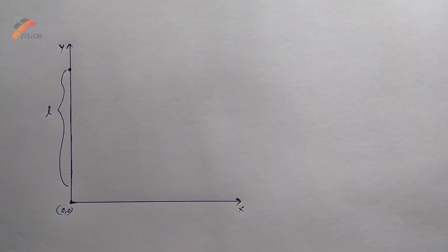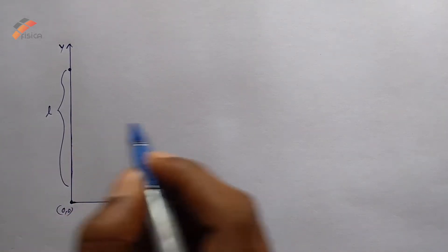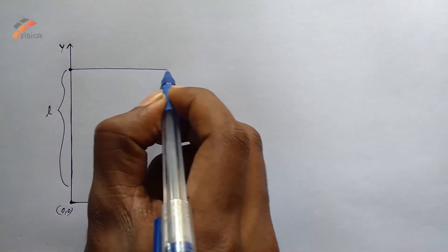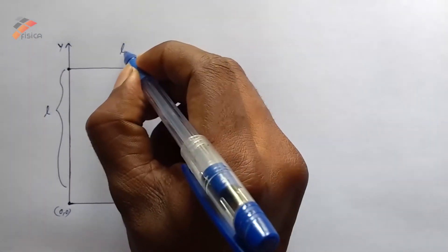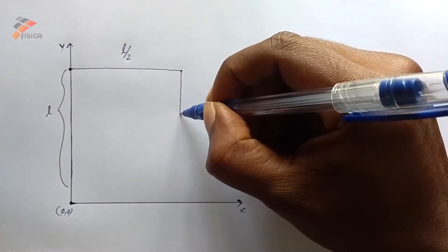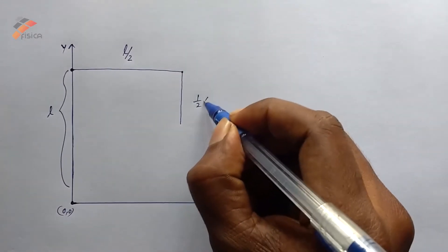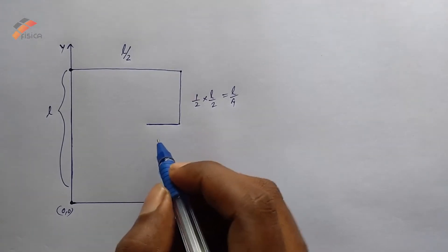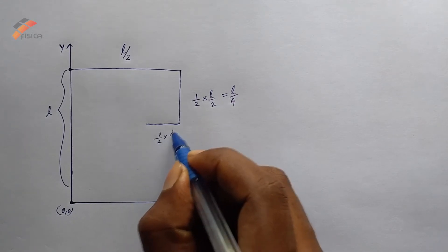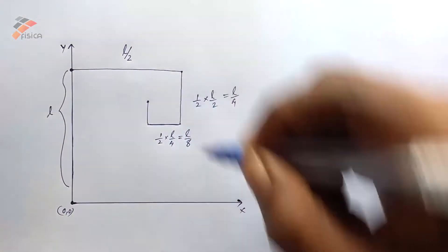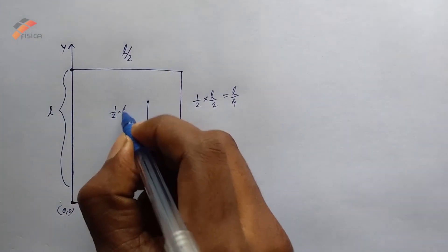Every subsequent stage requires the ant to turn right and move a distance which is half of its previous stage. So the ant turns right and travels half the previous stage, that is L/2. Again, the ant turns right and moves half of its previous distance, that is L/4. Again it turns right and travels half of the previous stage, that is L/8. Again it turns and travels half the distance, that is L/16.